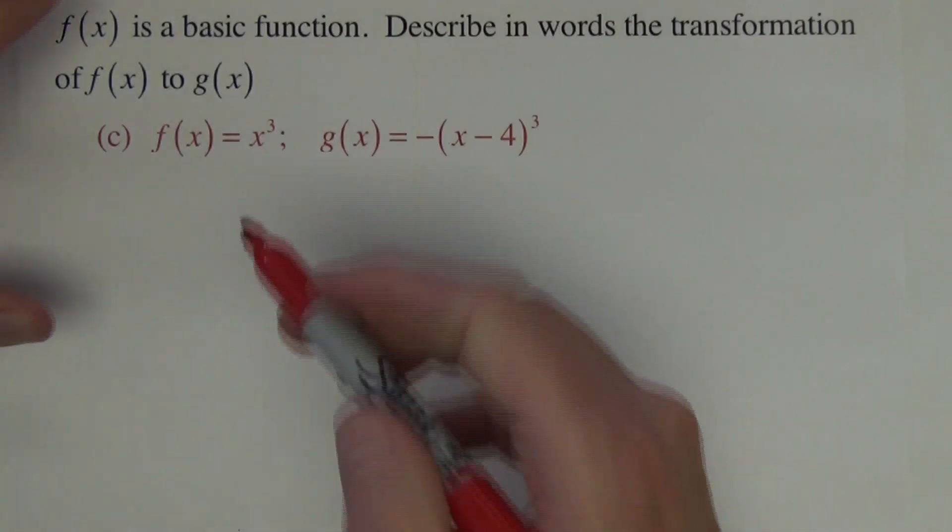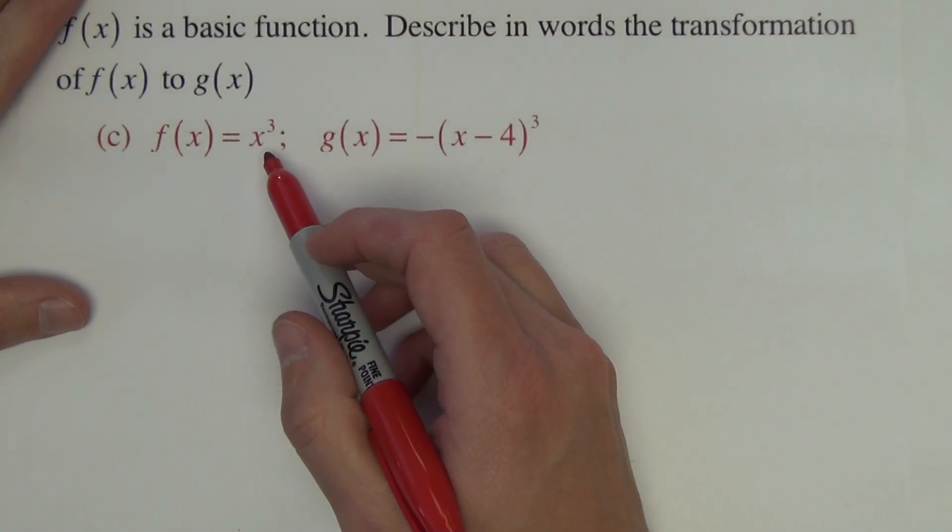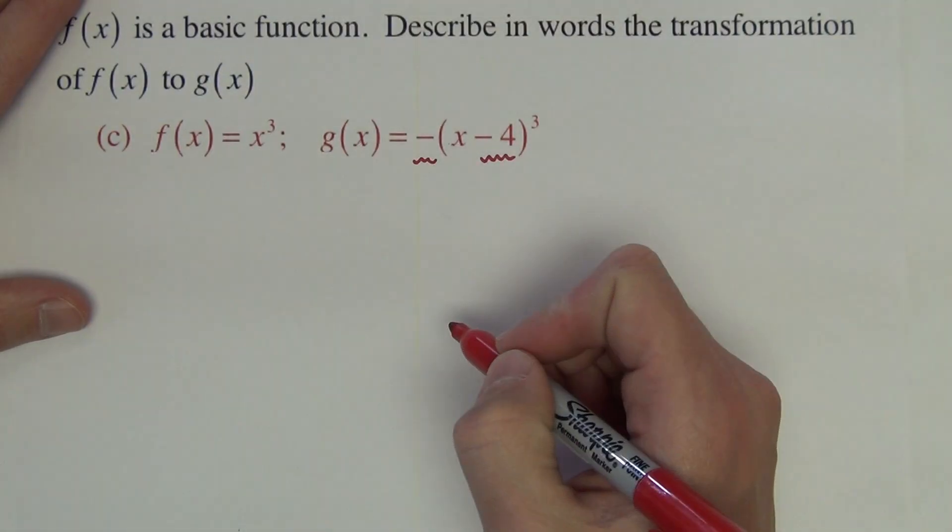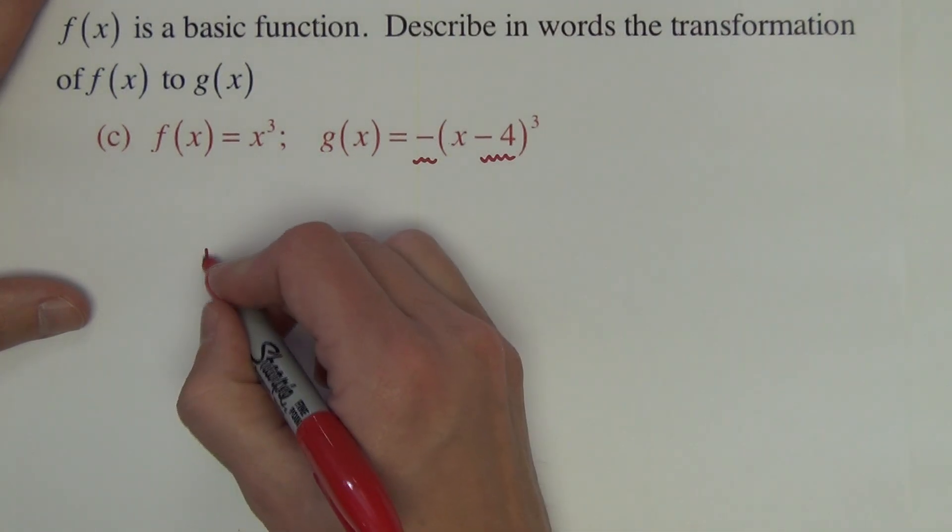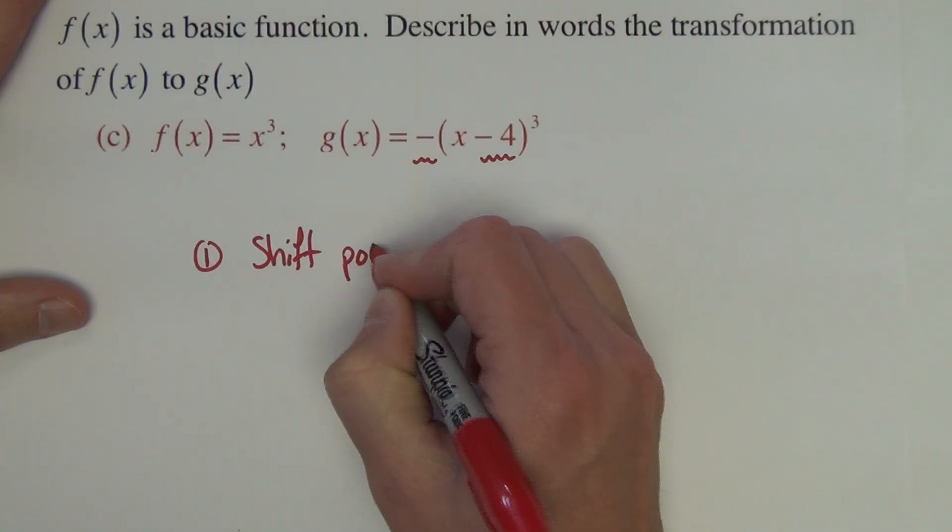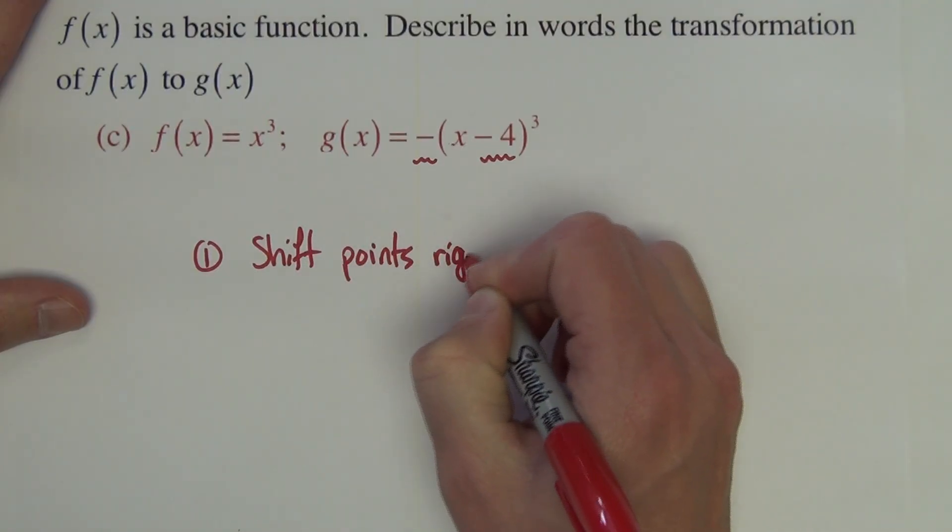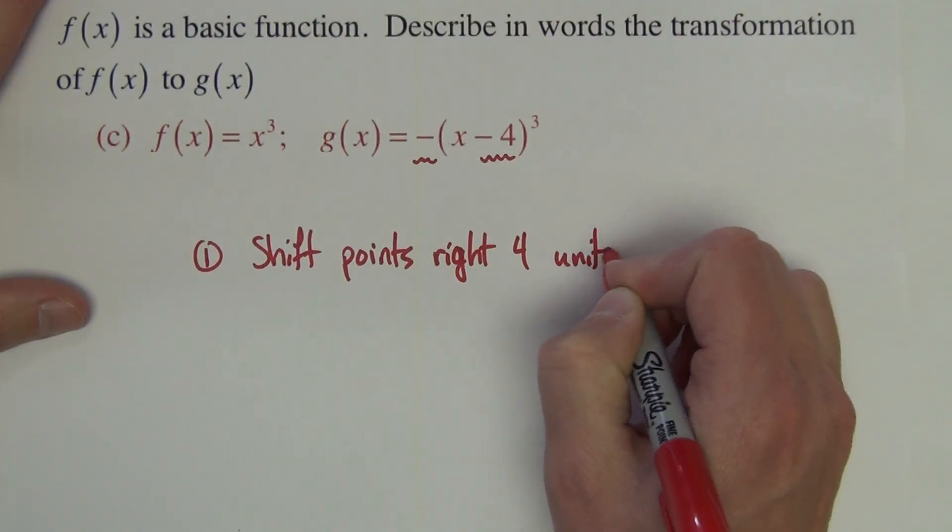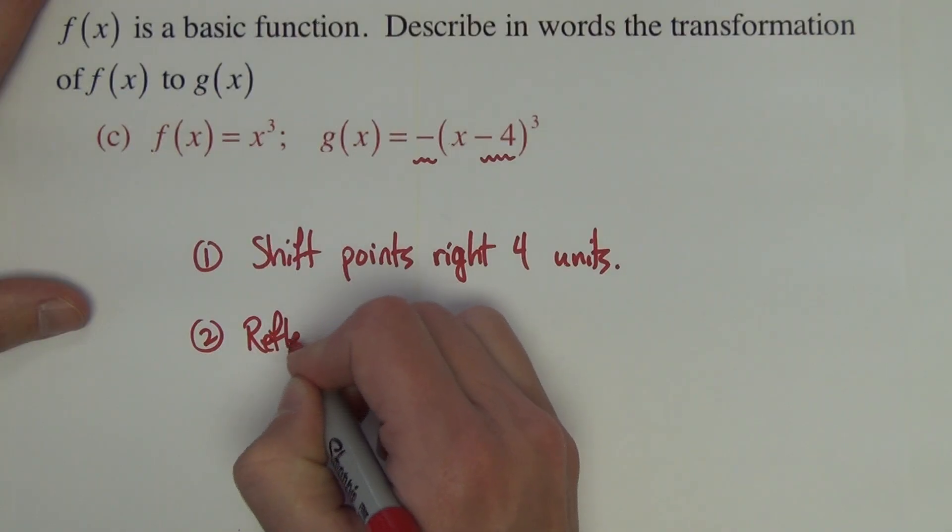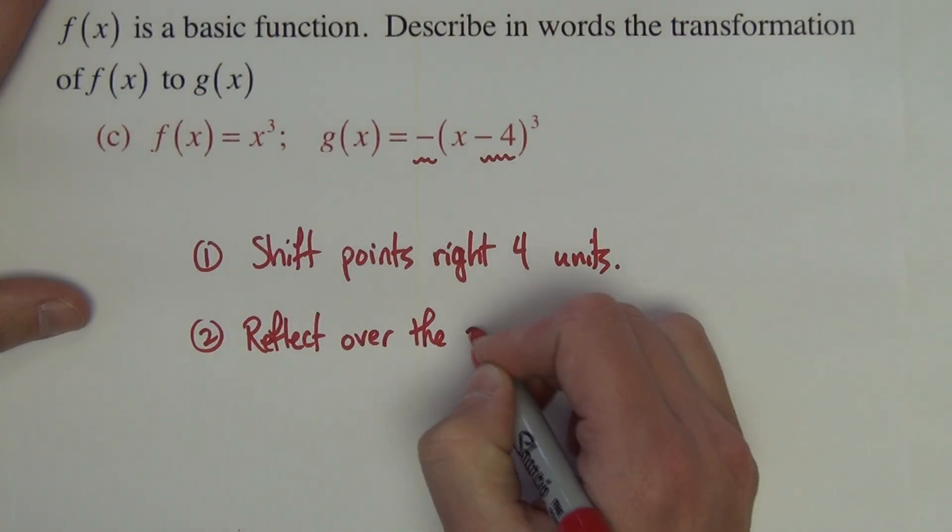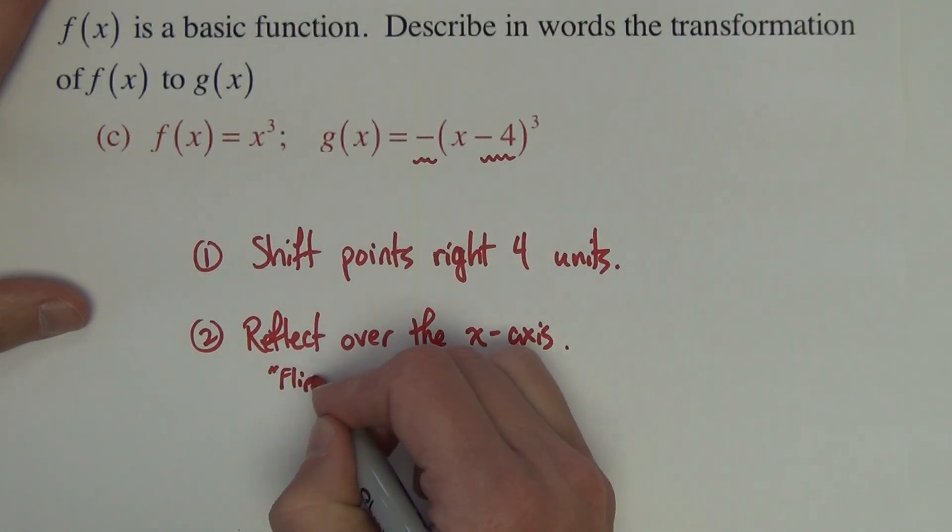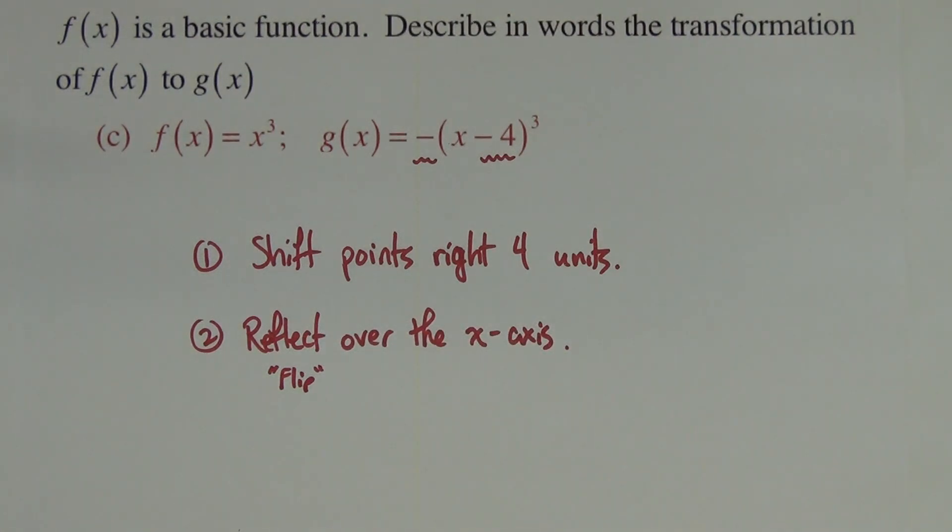The last one, the f of x, the basic function is x cubed. And then the transform function has this minus 4 here and then the negative in front. So what do those two things do to our basic function? The first thing is the minus 4 on the inside is going to shift points to the right 4 units. The negative in front is going to reflect, or flip, over the x-axis.